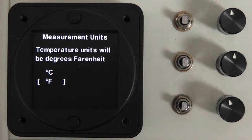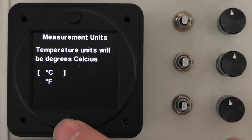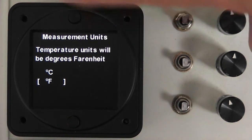Once in the function, you can select either degrees Fahrenheit or degrees Celsius display by pressing the bottom button and toggling between the two. We will select degrees Fahrenheit in this case.